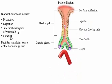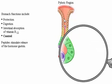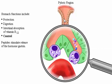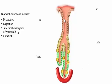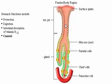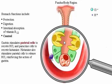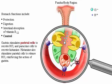Peptides stimulate release of the hormone gastrin. Gastrin is the most important factor for stimulating acid secretion. Gastrin stimulates parietal cells to secrete hydrochloric acid and stimulates paracrine cells to secrete histamine. Histamine also stimulates parietal cells to release hydrochloric acid, reinforcing the action of gastrin.